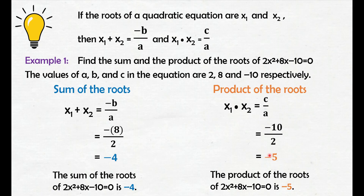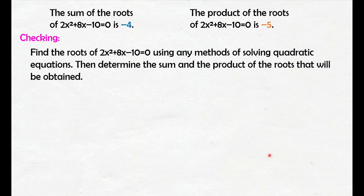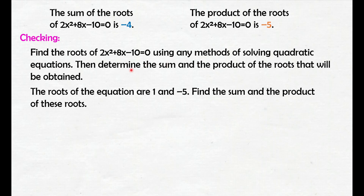So, we got the sum and product of the roots without knowing what the roots actually are. If we want to check, we can do that too. To check, we will find the roots by solving the quadratic equation. Find the roots of 2x squared plus 8x minus 10 equals 0 using any method of solving quadratic equations. Then, determine the sum and product of the roots that will be obtained.